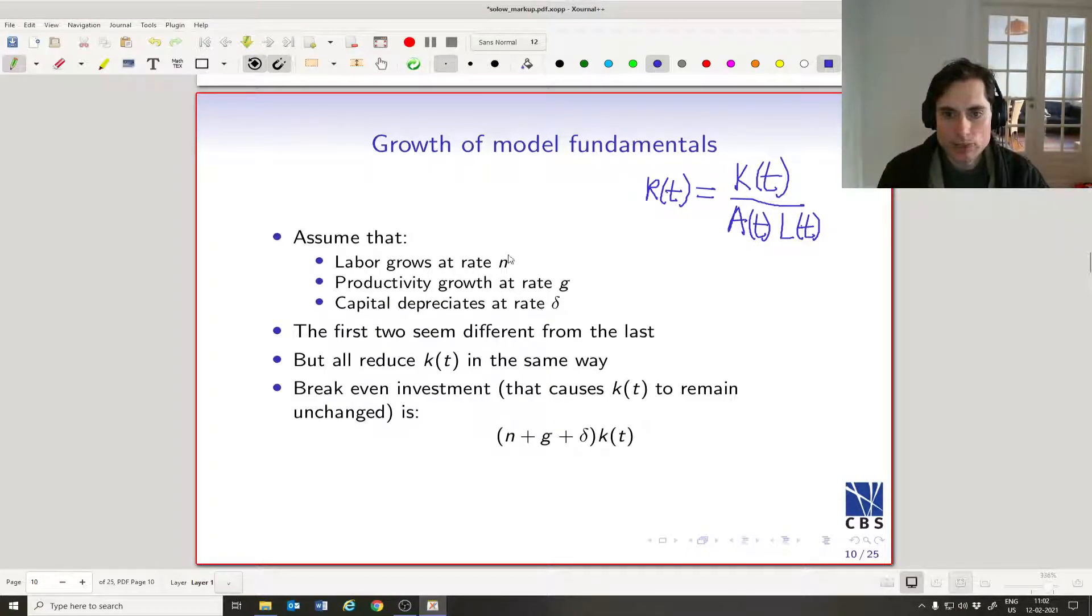So let's think about the way that this works. I mean, I think we're going to be more formal about this in just a moment. But what's happening is that big K(t), that's disappearing with rate δ. So that's going to cause this little k_t to decrease. But then note that L(t) and A(t) are growing with rate n and rate g. Since they're in the denominator, the growth of those guys is also going to cause little k_t to decrease. And in fact, it's going to be in a very similar fashion to the way δ causes big K(t) to decrease.